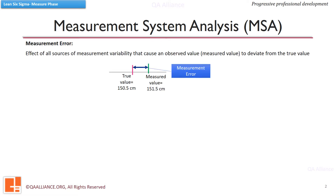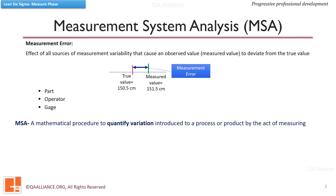There is another element called measurement error, which may add to the variation in process outputs. Measurement error is defined as the effect of all sources of measurement variability that cause an observed value, or the measured value, to deviate from the true value. This measurement error can be introduced by a part, operator, or gauge. We need to quantify this measurement error so as to get better and more accurate conclusions. To quantify the measurement error we make use of MSA — Measurement System Analysis — a mathematical procedure to quantify variation introduced to a process or product by the act of measuring.